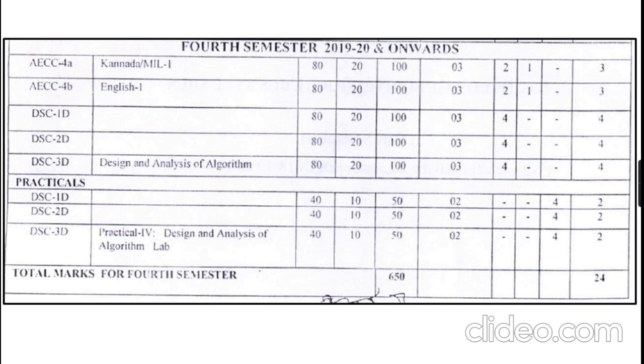In computer science, the Design and Analysis of Algorithms subject is there. It is for 100 marks — 80 external and 20 internal.